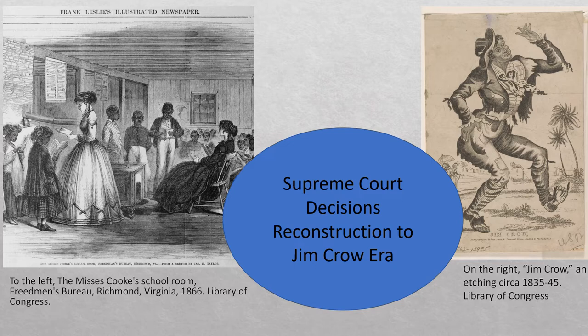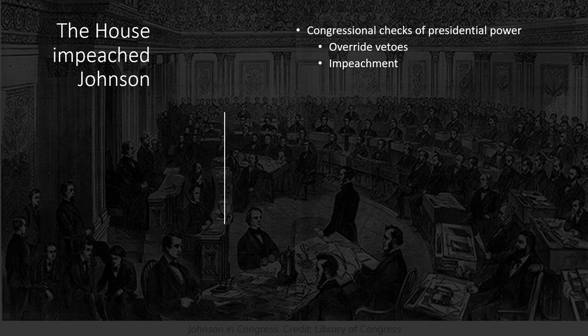Let's look at how the U.S. went from the hope of Reconstruction to the rise of Jim Crow. The Radical Republican Congress, after the 1866 midterm elections, had enough political power to direct Reconstruction during what we call Congressional Reconstruction.